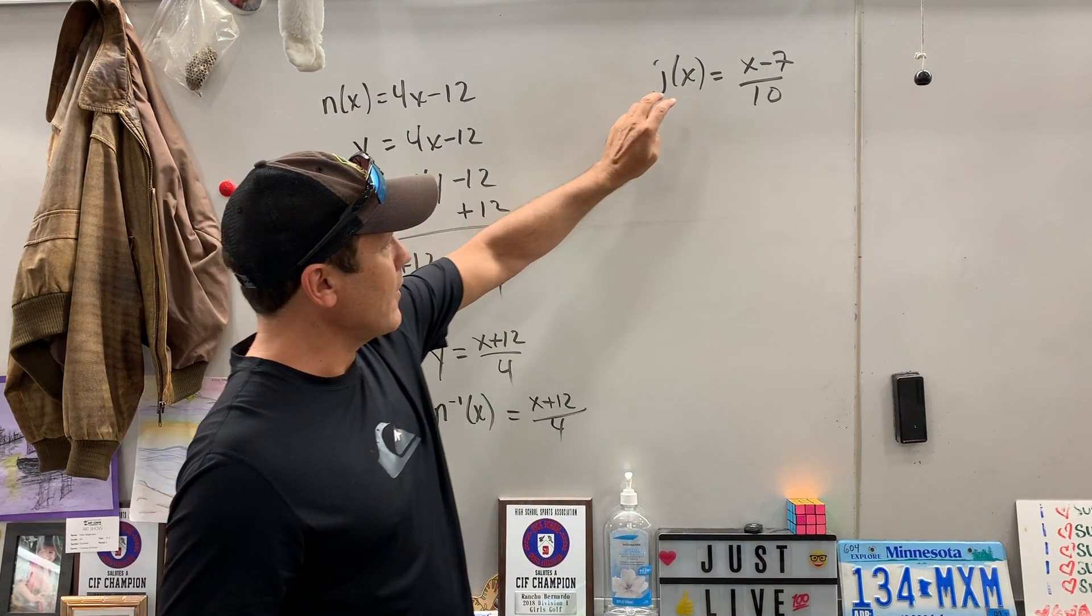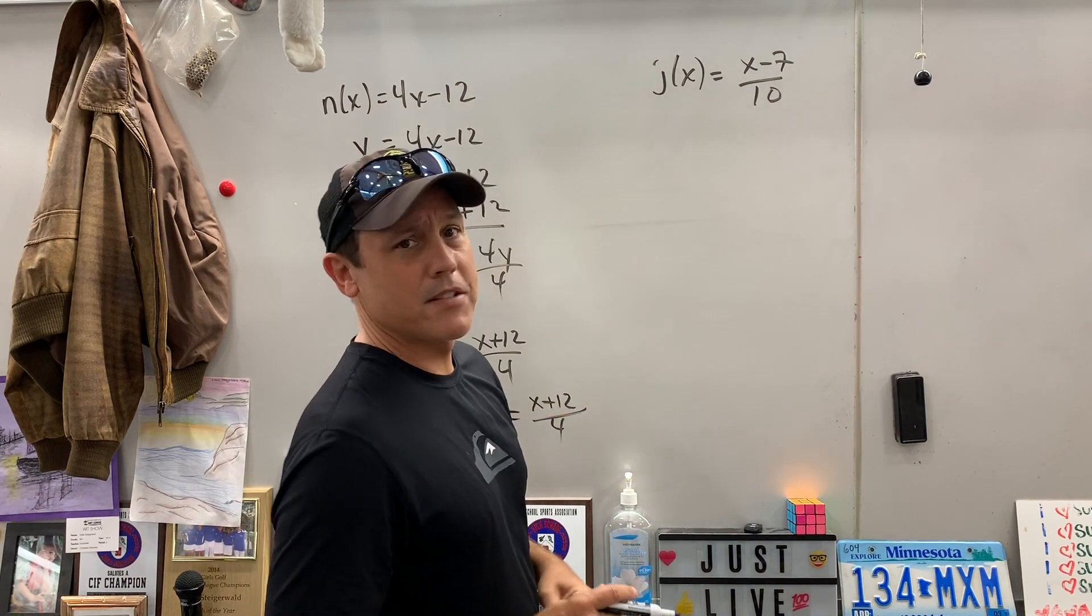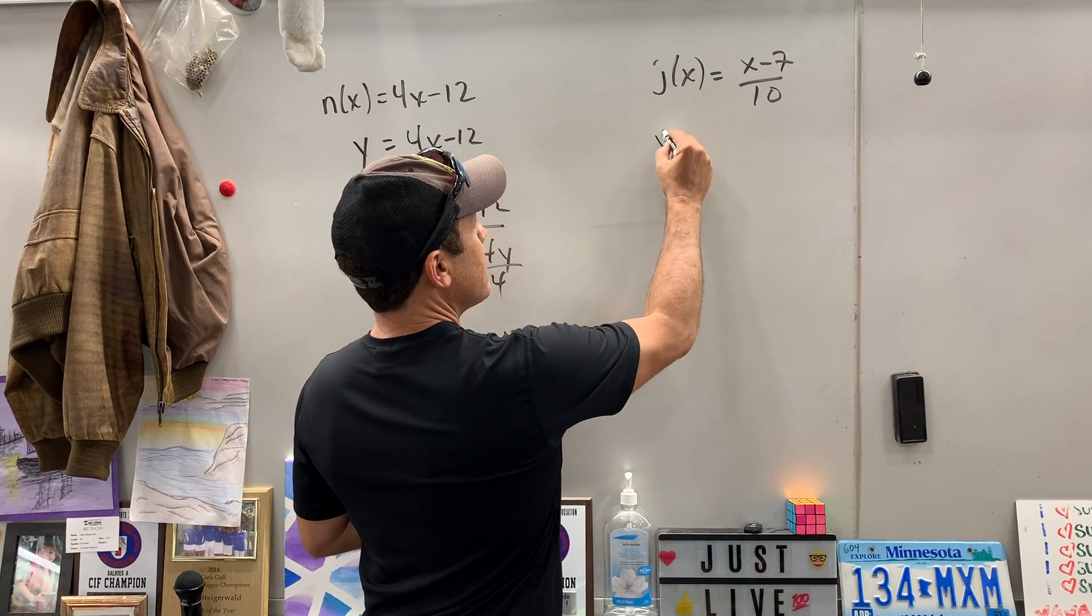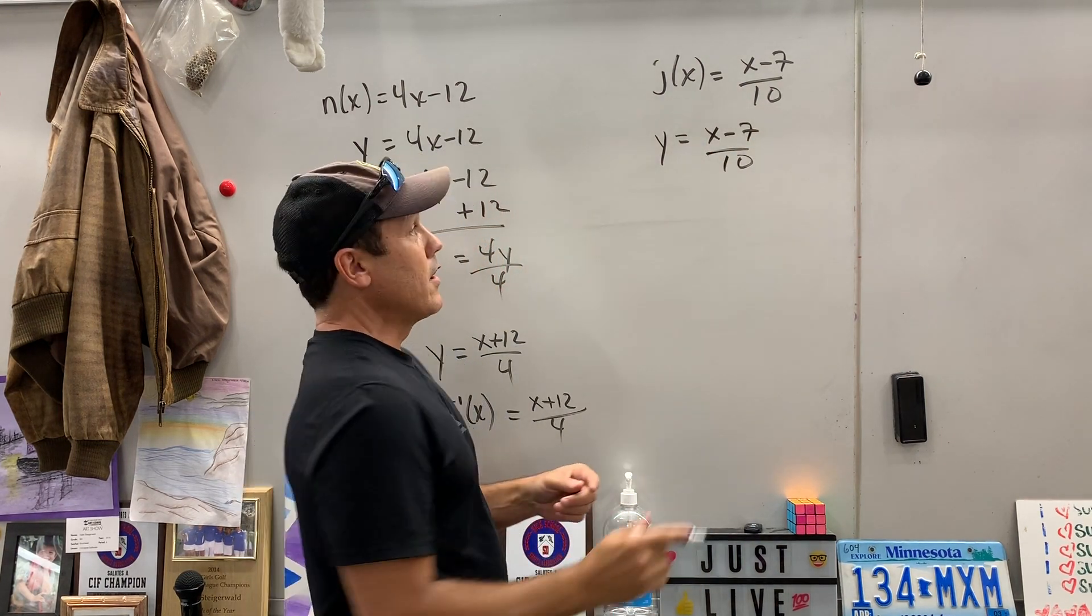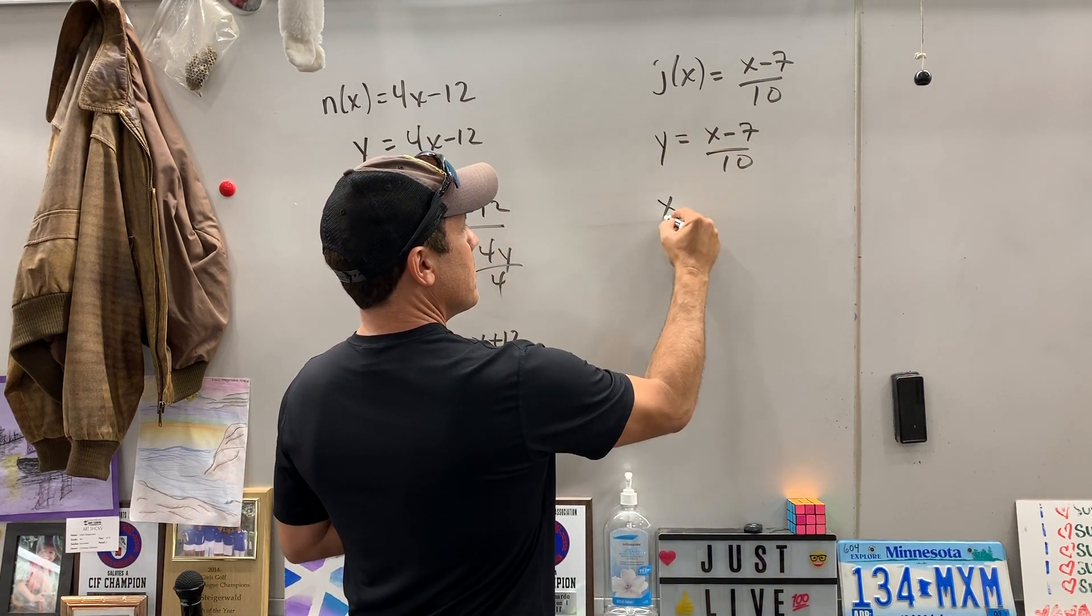Let's do another one. We got j of x is equal to x minus 7 over 10. Okay, change that to a y just for convenience sake. Okay, so there we go. We're going to interchange the x and the y.